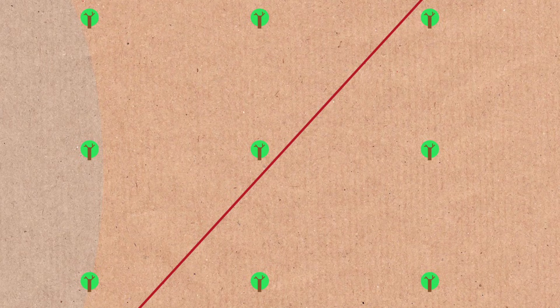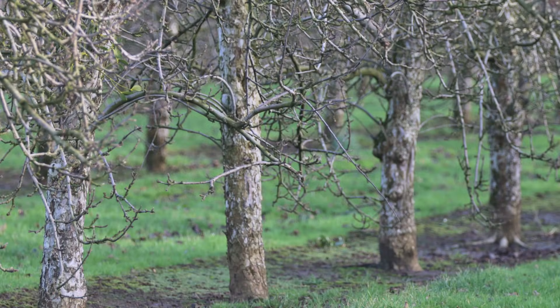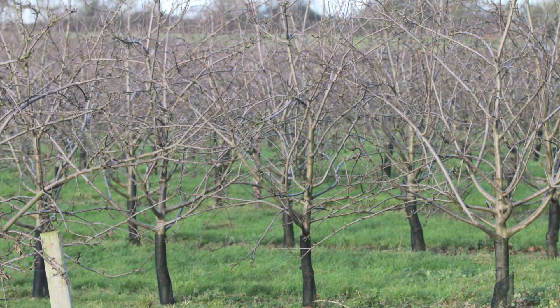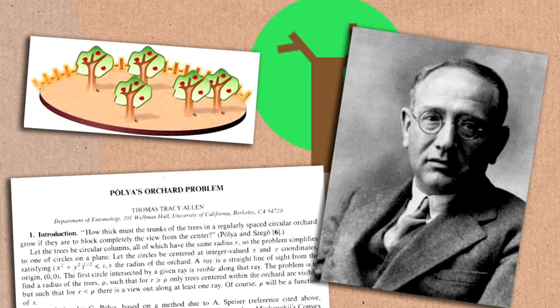This is where the mathematical model comes into question. You could upgrade the model — what if the trees are a little bit thick, or if you think of firing a laser beam, what if the beam is a little bit thick? It becomes very easy to realize that once thickness comes in you do get trees blocking the way. The question becomes how far can you see into the forest, and suddenly we've got a real-life question. That's Polya's orchard problem — how far does the laser get before it's blocked by a tree, depending on the thickness.